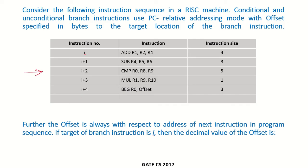This is the instruction sequence. Conditional and unconditional branch instructions use PC relative addressing mode with offset specified in bytes to the target location of the branch instruction. Further, the offset is always with respect to the address of the next instruction in the program sequence. If the target of the branch instruction is I, then what is the decimal value of the offset?